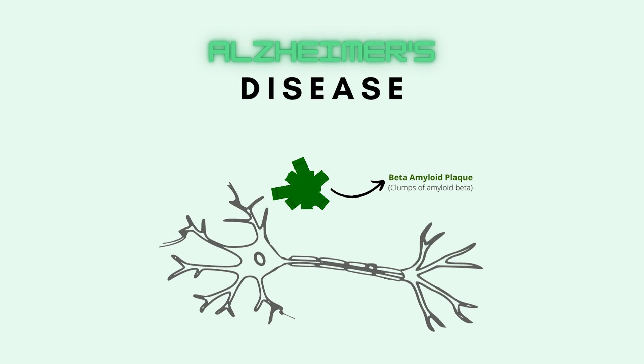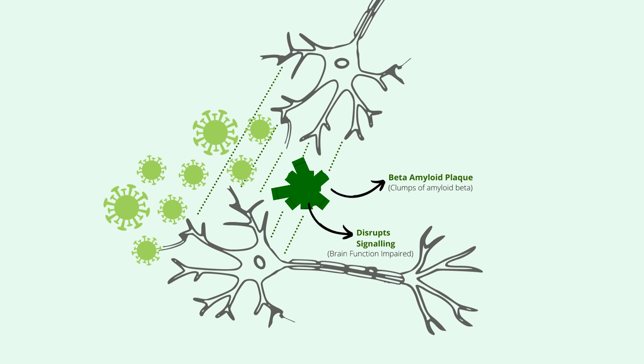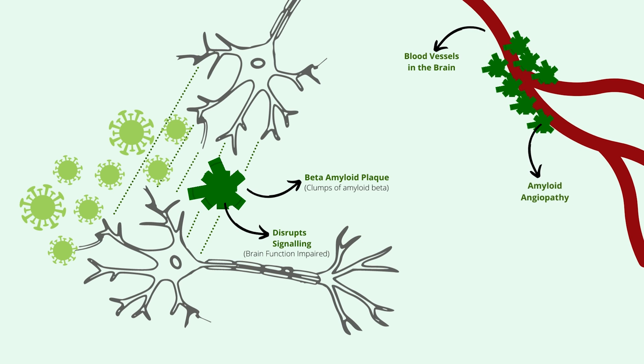This plaque can potentially get between the neurons and interfere with neuron-to-neuron signaling. If the brain cannot signal and relay information, then brain functions like memory and awareness can be seriously impaired. These plaques can also trigger an immune response and cause inflammation, which can damage surrounding neurons. A condition called amyloid angiopathy arises when beta amyloid plaques deposit around blood vessels, weakening their walls and increasing the risk of hemorrhage or rupture.